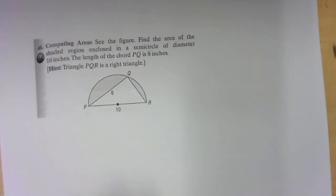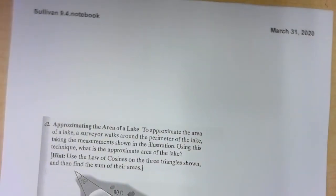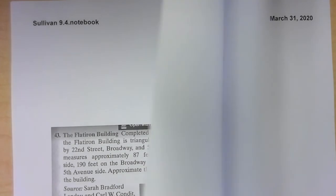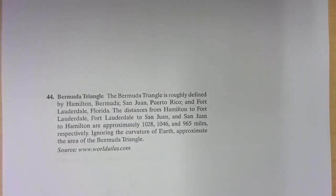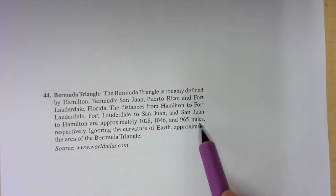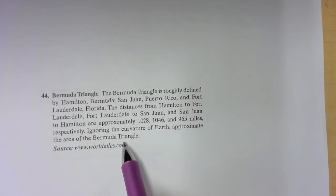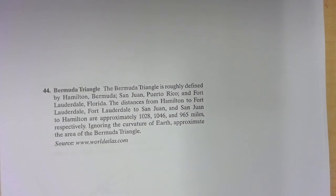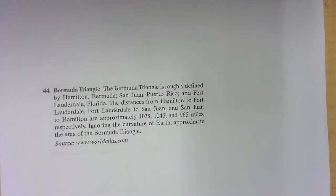Number 44 is a fun application — the Bermuda Triangle. It gives the distances in miles between the different cities and locations. We ignore Earth's curvature to approximate the area. You can't check this in the back of the book, but the ballpark answer is between 400,000 and 500,000 square miles. That concludes the video for the area of a triangle.